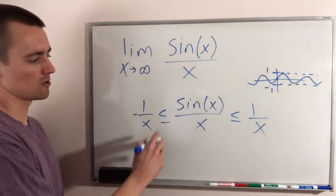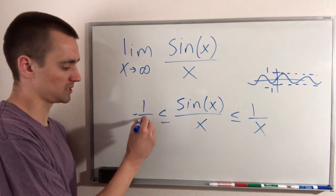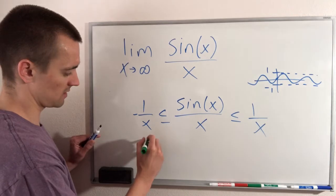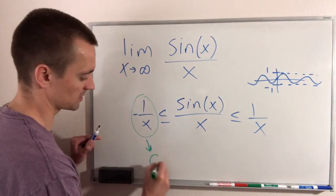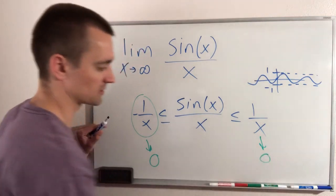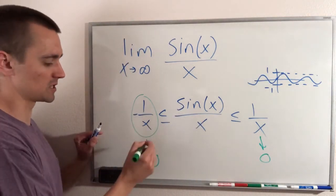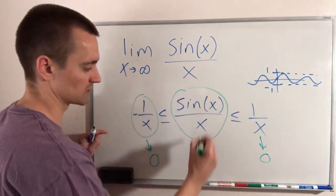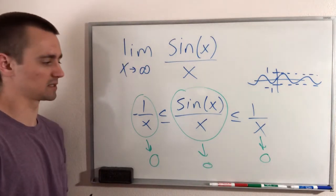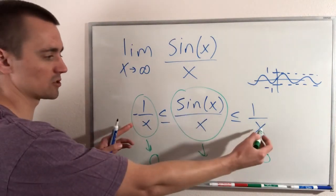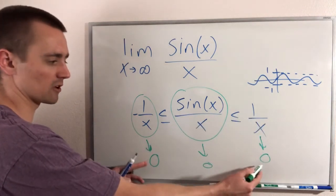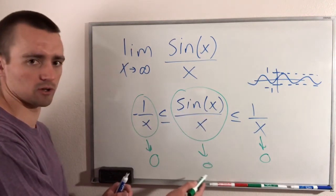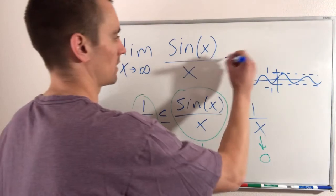So if we know that sine of x over x is trapped between these two functions, and as x goes to infinity both of them get closer and closer to zero, then since sine of x over x is always between two things that are closing in on zero, it must also go to zero. That's all the squeeze theorem says: if a function is trapped between two other functions and both of those functions go to the same limit, then the trapped function must also go to that same limit. So the limit as x goes to infinity of sine x over x is zero.